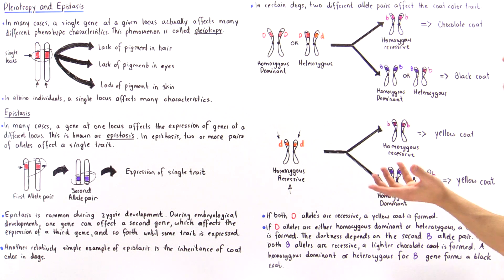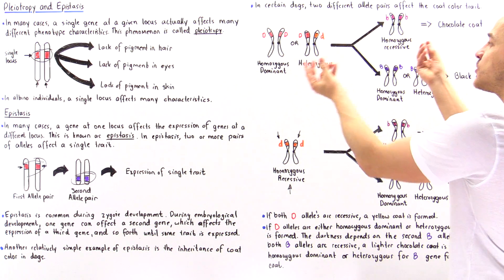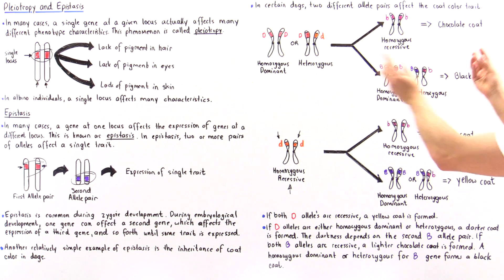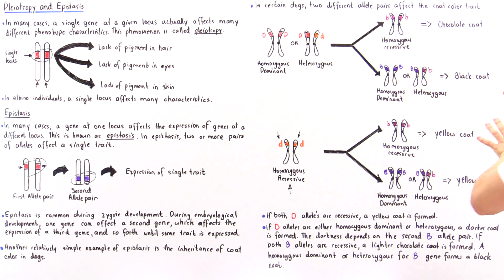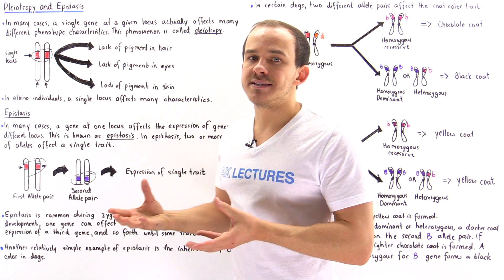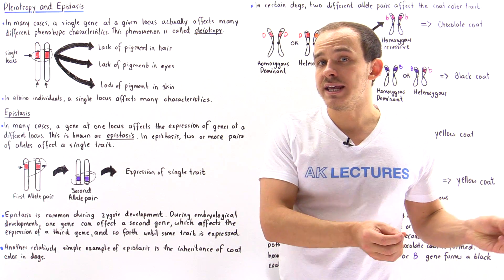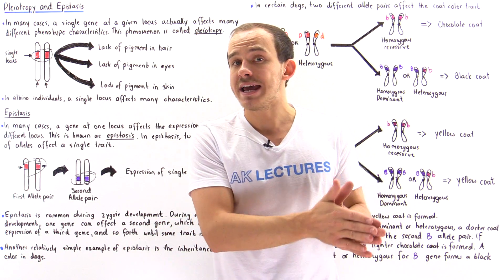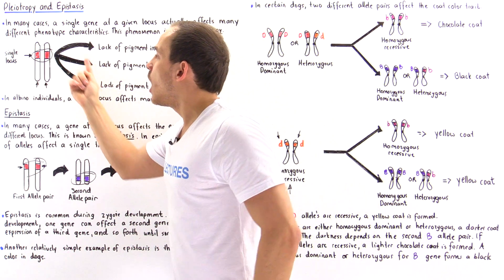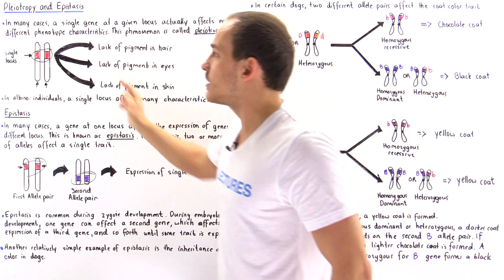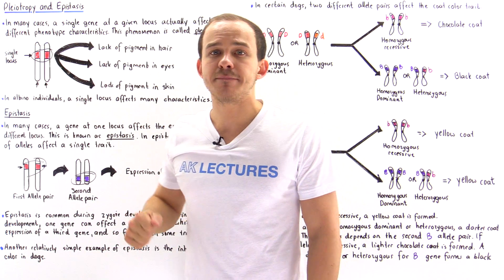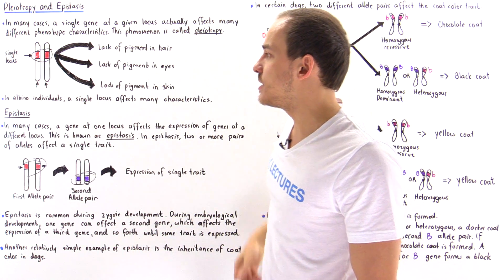This is an example of epistasis because we have an interaction of at least two different pairs of alleles at two different loci that ultimately affect a single trait — the color of the dog's coat. Epistasis is when two or more pairs of alleles at different loci interact to produce some type of trait. By contrast, pleiotropy is the process by which a single locus — a single pair of alleles on a single locus of a homologous chromosome pair — expresses many different types of phenotype traits.